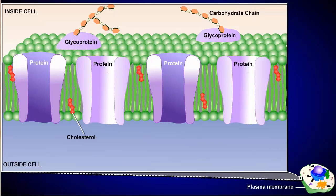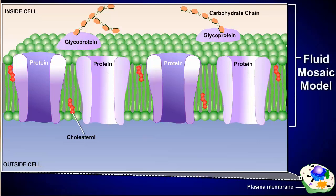The phospholipids, proteins, glycoproteins, and cholesterol are all present in the membrane as a flexible pattern, commonly referred to as the fluid mosaic model.